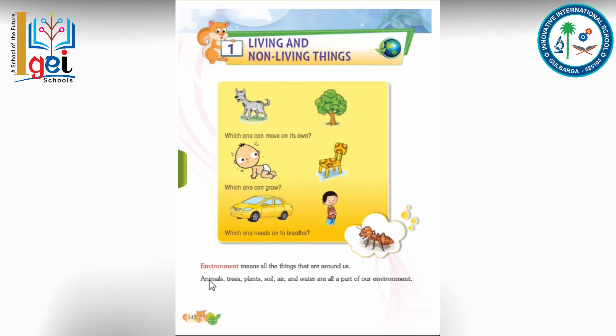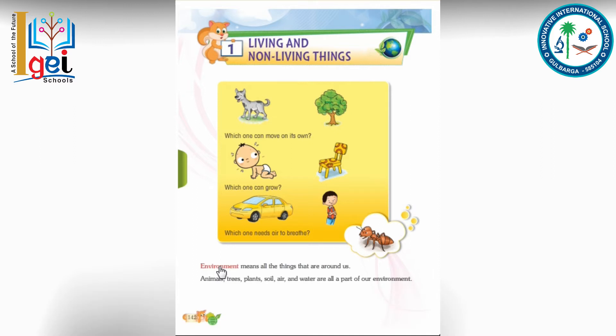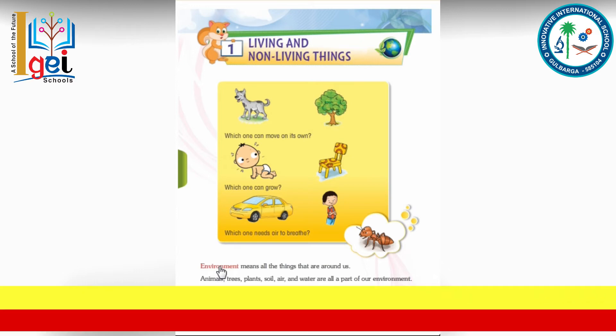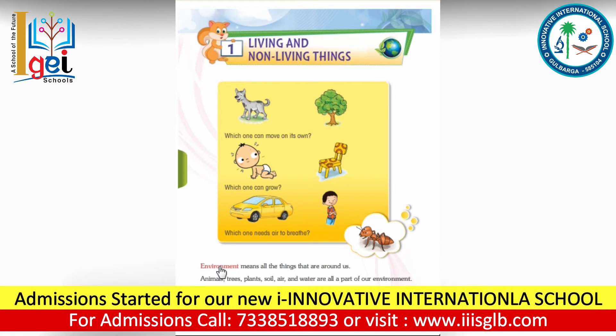So what is environment? Environment means all the things all around us — like animals, trees, plants, human beings, water, air, what we breathe, what we eat — everything that comes around us is part of our environment.